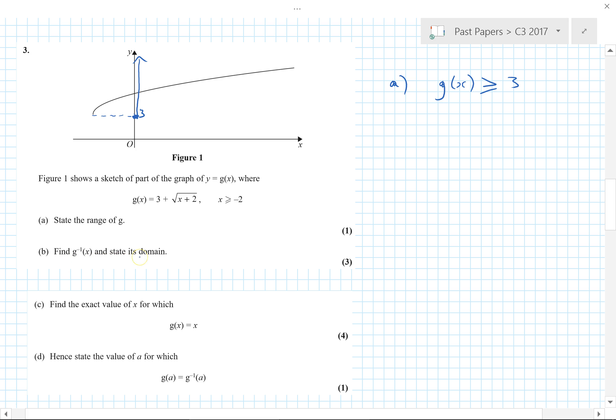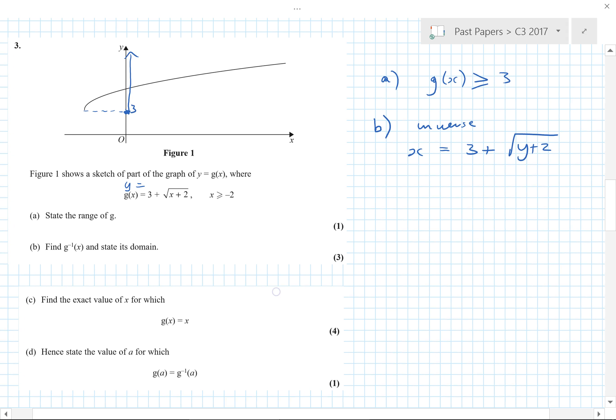Find G minus 1 and state its domain. Well, if I swap my X's and Y's around, the inverse function will be X equals 3 plus the square root of Y plus 2, swapping X and Y's around in this function. So then I just need to rearrange. I've got the square root of Y plus 2 is equal to X minus 3. And so I can square. Y plus 2 is equal to X minus 3 squared. So Y equals X minus 3 squared take away 2. Save yourself a problem, you don't need to multiply out, you've completed square form which is fine.